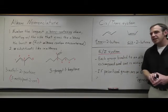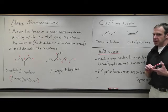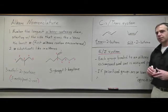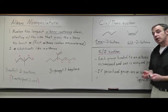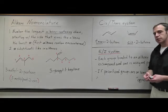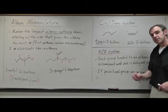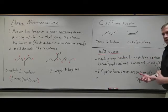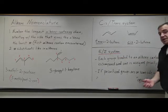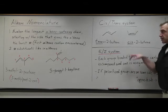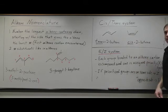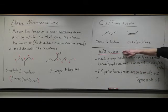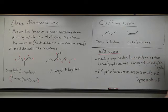Essentially, E is like trans because we will assign priorities and if those prioritized groups are on opposite sides of the molecule, that's E. And Z is kind of like cis, but Z will not always be cis and E will not always be trans if you compare the two schemes. And so we always just use this scheme exclusively for naming.